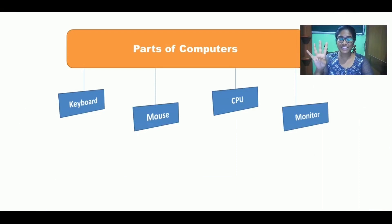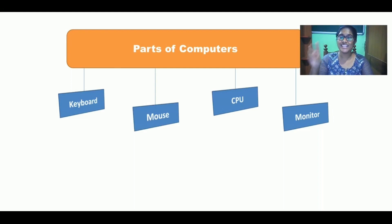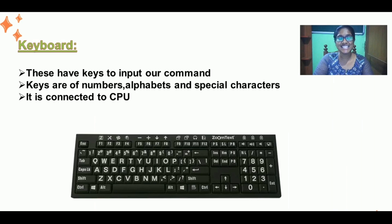There are four main parts of computer: the monitor, CPU that is central processing unit, mouse, and keyboard. Let us study in detail one by one.